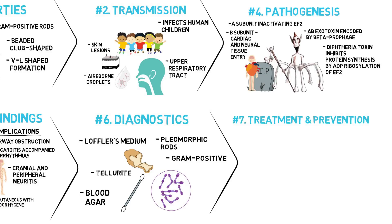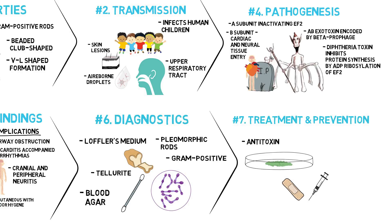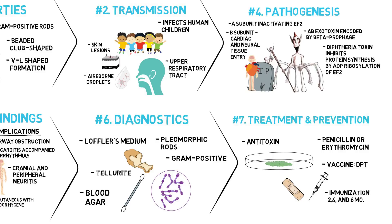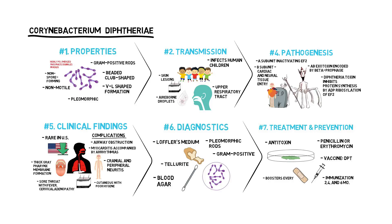Treatment. The treatment of choice is antitoxin. The toxin binds rapidly and irreversibly to cells and, once bound, cannot be neutralized by antitoxin. Treatment with penicillin G or erythromycin is also recommended, but neither is a substitute for antitoxin. Immunization consists of three doses given at two, four, and six months of age, with boosters at one and six years of age.